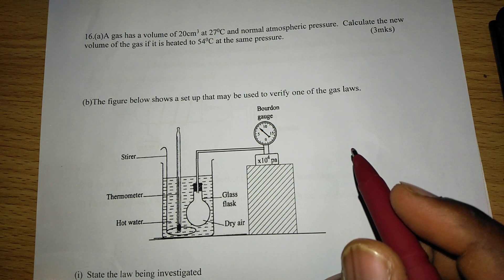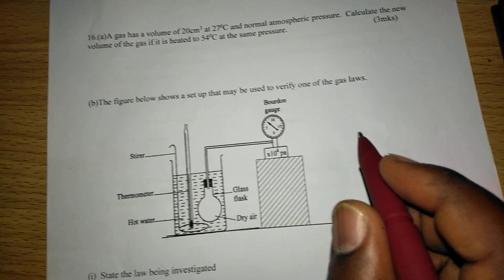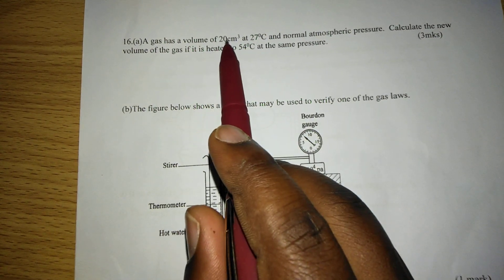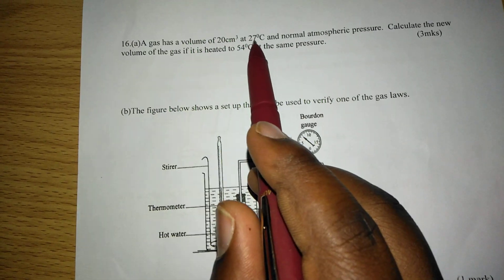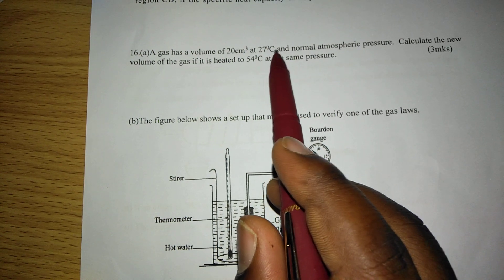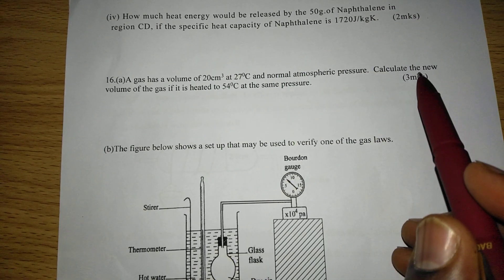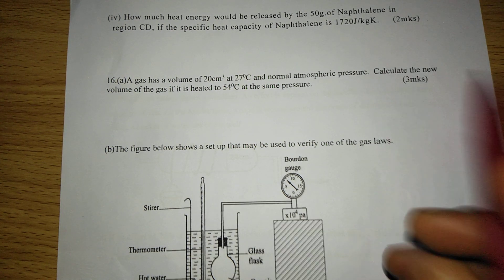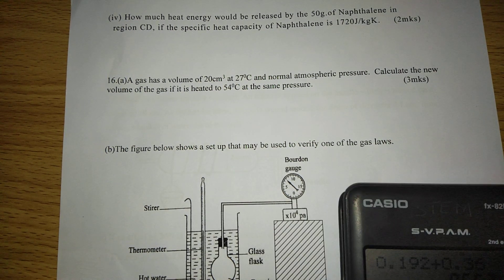Thank you for joining this lesson. We're going to study gas laws. The first question tells us that a gas has a volume of 20 cubic centimeters at 27 degrees Celsius and normal atmospheric pressure. Calculate the new volume of the gas if it is heated to 54 degrees Celsius at the same pressure.